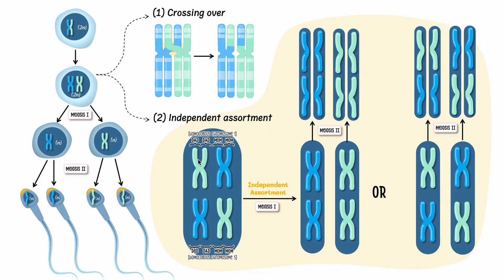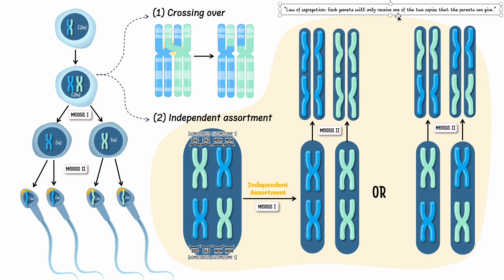Imagine combining both independent assortment and crossing over — the number of unique combinations of sperm you can make is enormous. When talking about independent assortment here, we didn't even consider crossing over, but remember crossing over happens at the same time. You must also be aware of Mendel's law: each gamete will only receive one of the two copies that the parent can give. The parent had a copy from the mother and from the father, but the gamete contains only one copy — and that's okay, because when it combines with another copy from the egg, we form a normal cell.